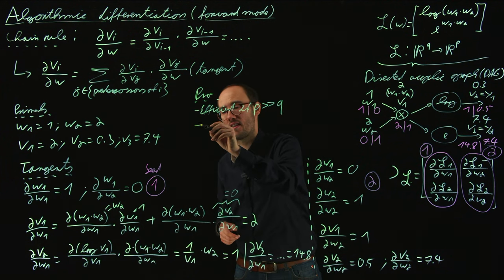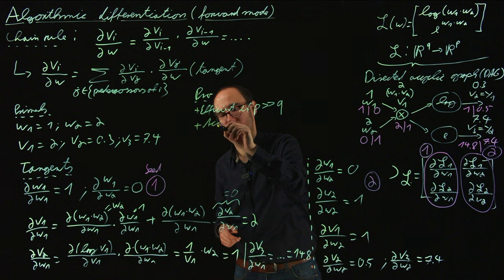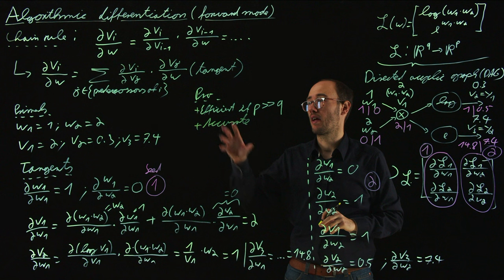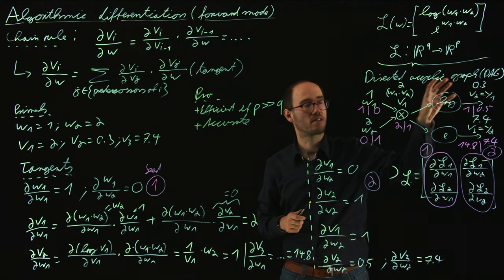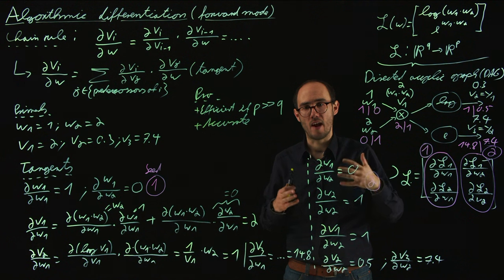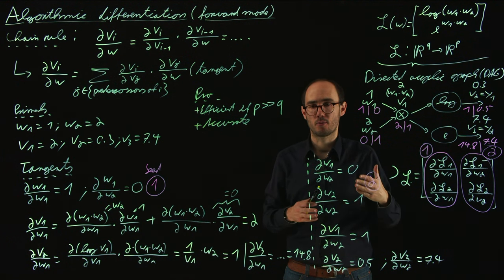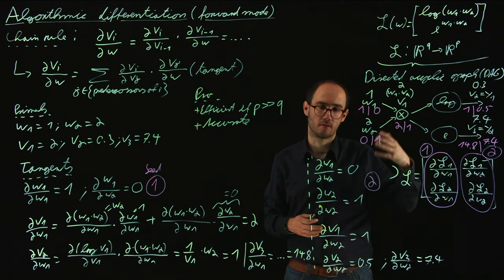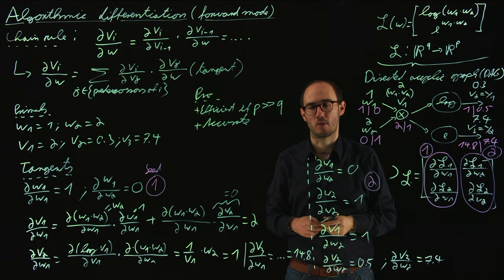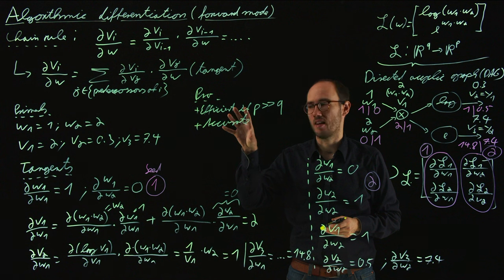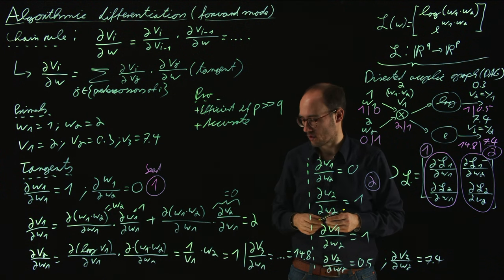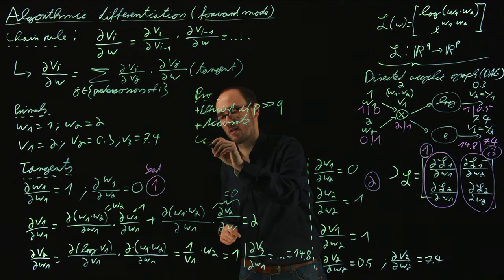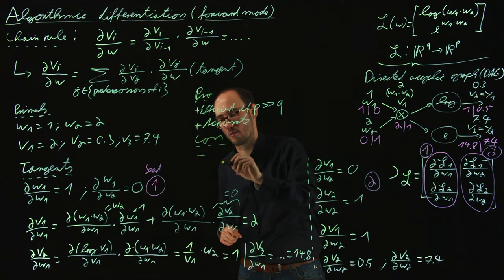Another advantage of forward mode automatic differentiation is that it is also accurate. By applying the chain rule based on this directed acyclic graph, we do not make any approximation. So we get the nice property of accurate derivative information — in the Jacobian, the gradient, and the Hessian — exact with respect to the computational accuracy of numerics. The con is that it is not really applicable for machine learning problems, where Q is much larger than P, since our output space is normally just a scalar cost function.